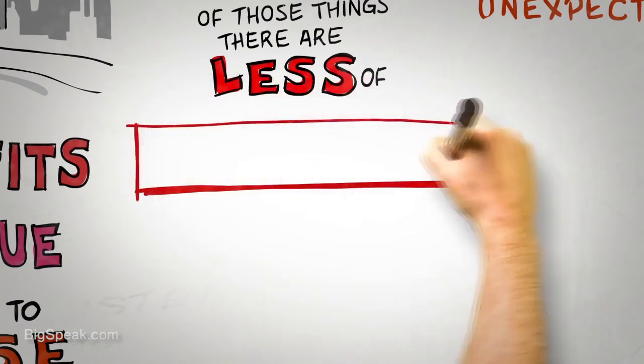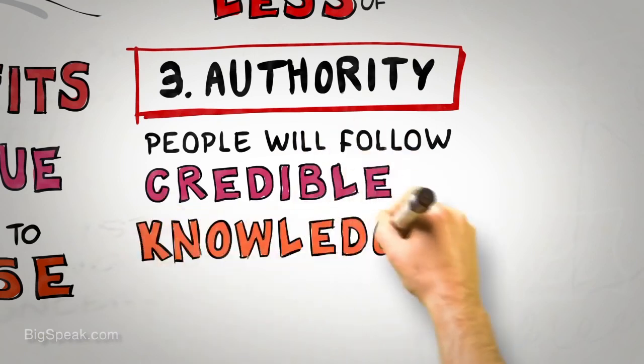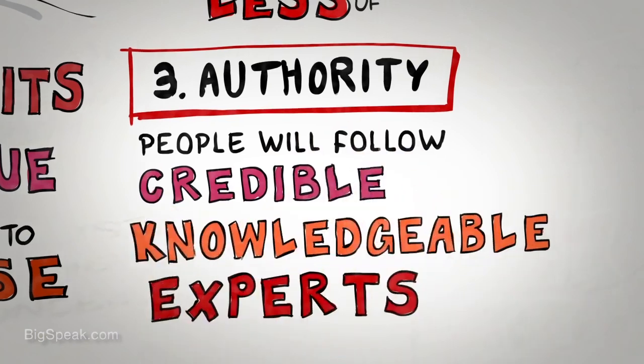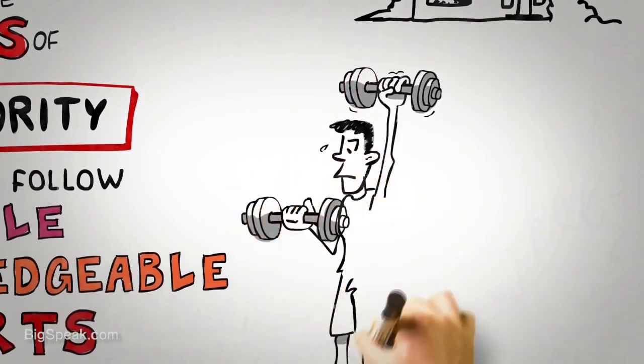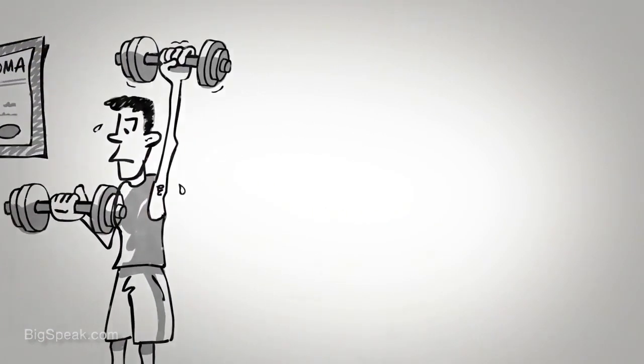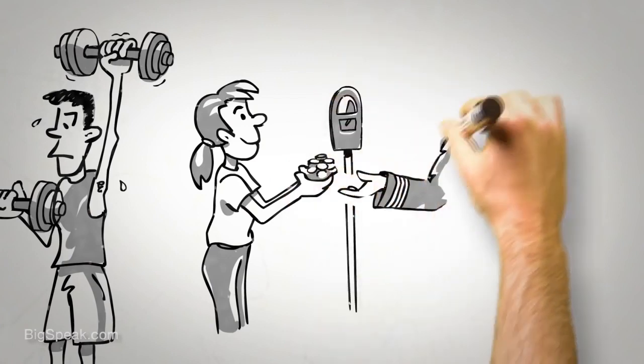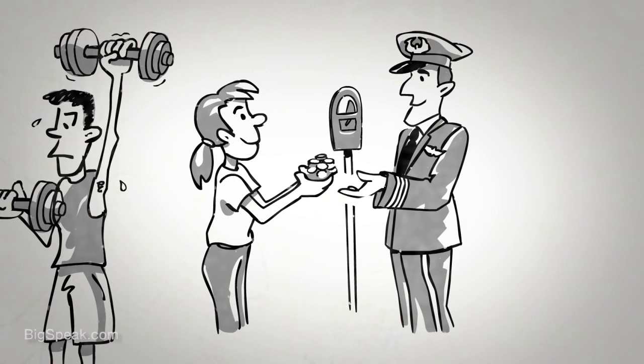Our third principle of influence is the principle of authority, the idea that people follow the lead of credible, knowledgeable experts. Physiotherapists, for example, are able to persuade more of their patients to comply with recommended exercise programs if they display their medical diplomas on the walls of their consulting rooms. People are more likely to give change for a parking meter to a complete stranger if that requester wears a uniform rather than casual clothes. What the science is telling us is that it's important to signal to others what makes you a credible, knowledgeable authority before you make your influence attempt.